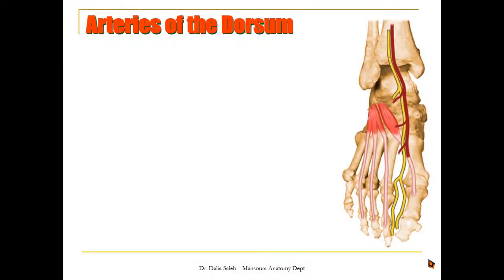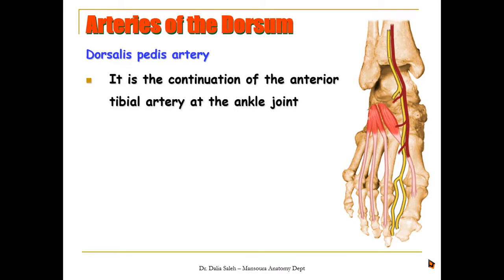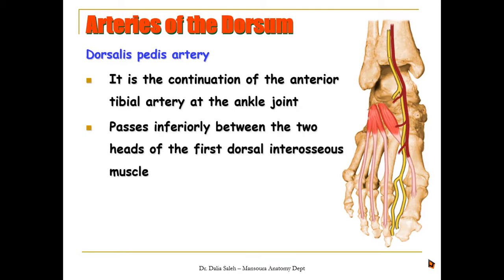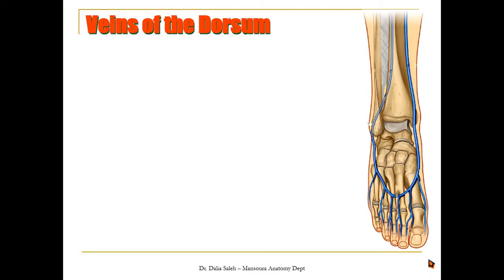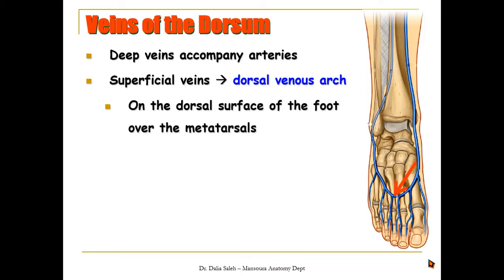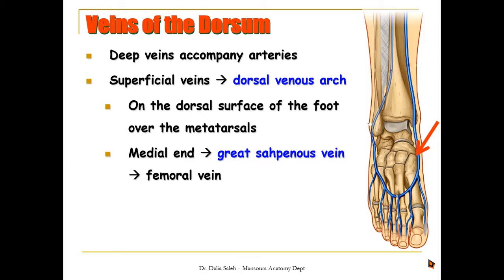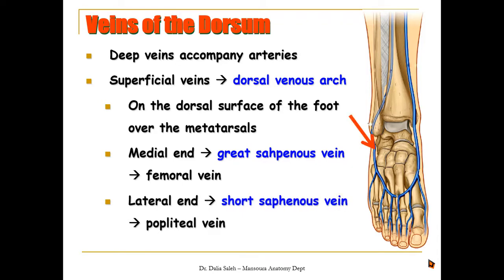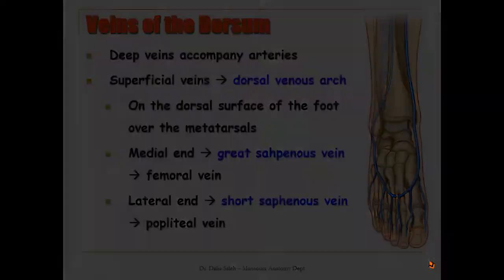The arteries at the dorsum of the foot are represented by the dorsalis pedis artery, which is a continuation of the anterior tibial artery in front of the ankle joint. It terminates by passing inferiorly between the two heads of the first dorsal interosseous muscle to join the deep plantar arch. For venous drainage, the superficial veins form the dorsal venous arch over the metatarsals; its medial end gives rise to the great saphenous vein terminating at the femoral vein, while its lateral end gives the short saphenous vein terminating at the popliteal vein.